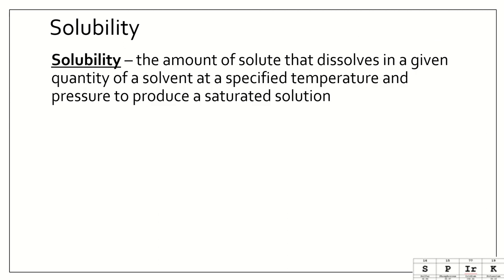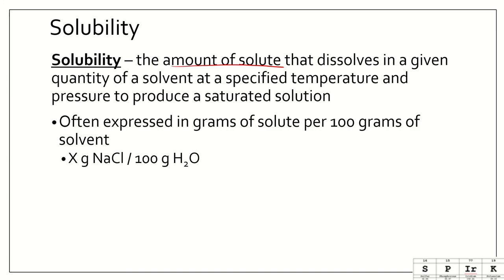So solubility, we've talked about the word soluble and insoluble before. Solubility is the amount of solute that dissolves in a given quantity of solvent at a specified temperature and pressure to produce a saturated solution. So basically it just says we can look up solubility values for like if water is at 100 degrees Celsius, how much salt will dissolve. Or if it's at 50 degrees Celsius, how much salt will dissolve. This is often expressed in grams of solute per 100 grams of solvent. So for example, there is some number of grams of sodium chloride that will dissolve in 100 grams of water.